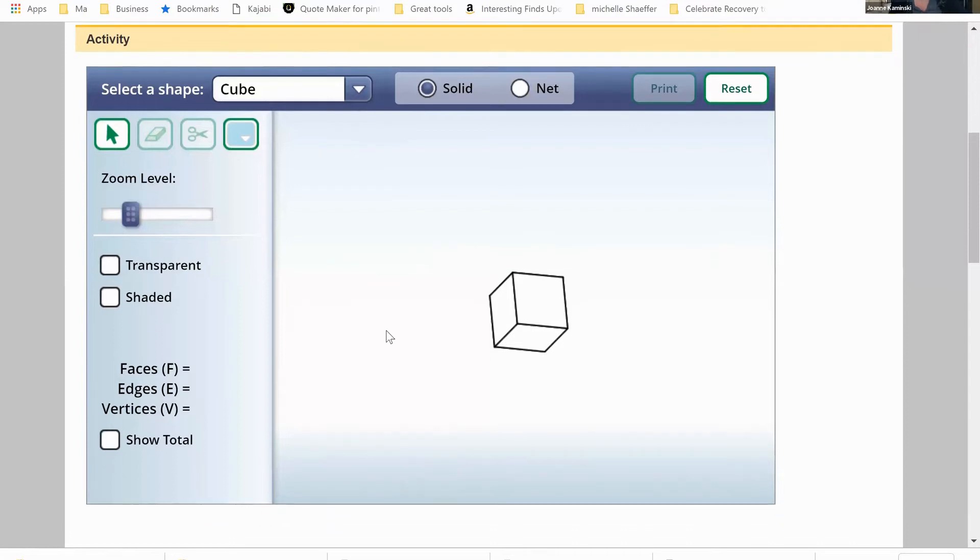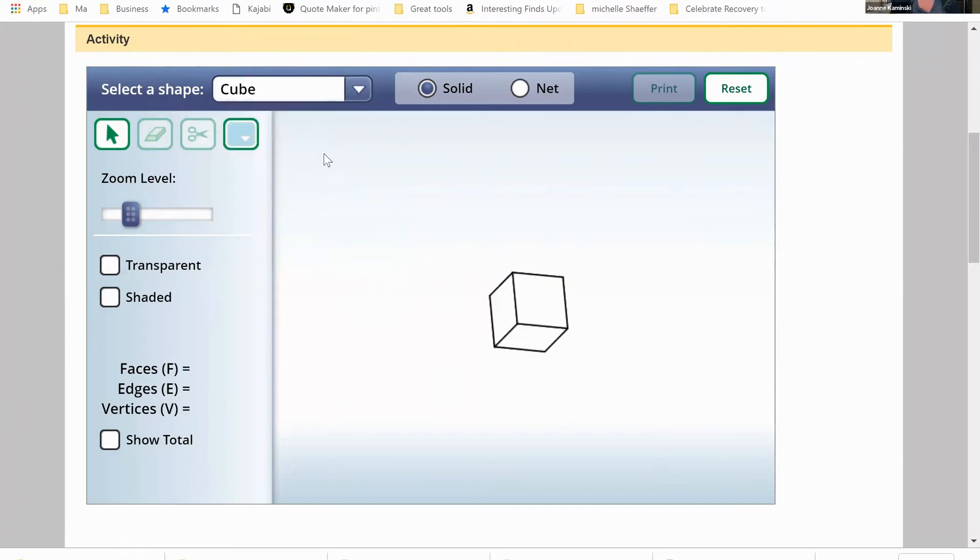This is a really cool tool called geometric solids. You're able to actually count the faces that are on any type of thing that you want to take a look at. So you can do a tetrahedron, a cube, an octahedron, dodecahedron, or an icosahedron. Let's take a look at icosahedron. Holy cow, that's a lot of pieces, isn't it? But take a look. I'm just going to show you something really simple with the cube.